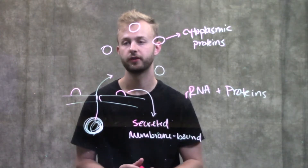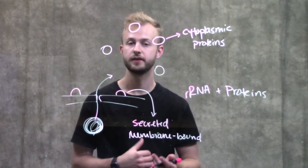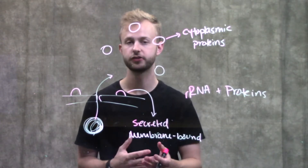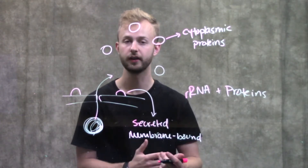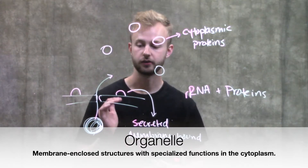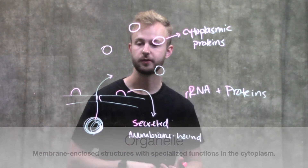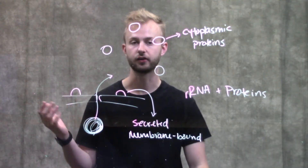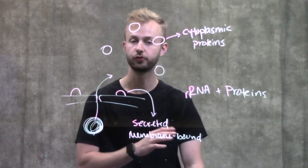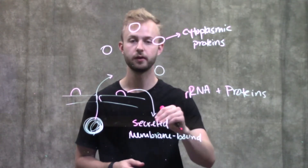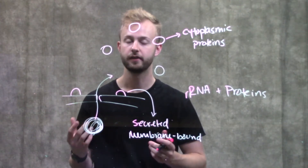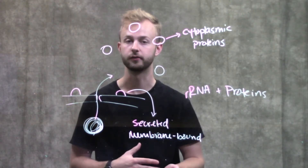Something important to remember is that the ribosome is not an organelle, because it has no membrane. The definition of an organelle is something that is membrane bound. In eukaryotic cells, that includes things like the nucleus, the Golgi body, and the endoplasmic reticulum — both rough and smooth. But since the ribosome doesn't have a membrane, it is not membrane bound, and therefore it is not an organelle.